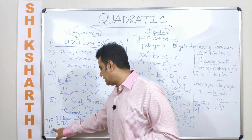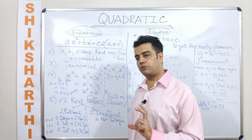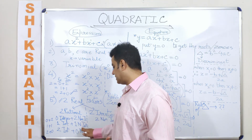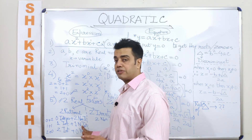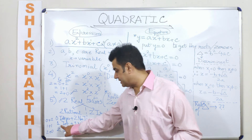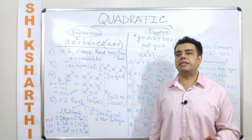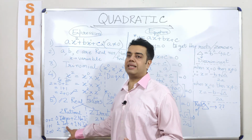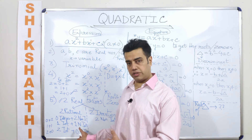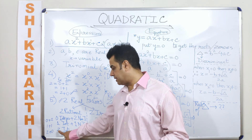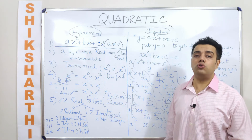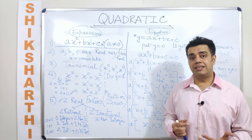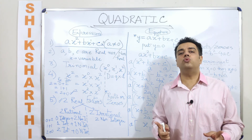I can write down the quadratic expression as a product of two rational factors where both are integers, or one is an integer and one is a non-integer. For example, x minus 1 into x minus one-half is an example of a quadratic expression written as a product of one integer factor and one non-integer factor. Similarly, x minus 2 into x minus 1 is a quadratic expression with two integer factors.